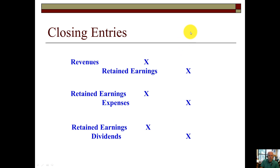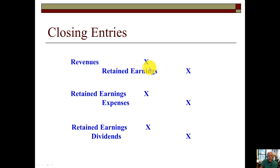Our closing entries are pretty simple. To zero out and reset the game clock, we zero out the revenues by debiting them — notice they normally have a credit balance — so by debiting them we zero them out and transfer that balance to retained earnings. Conversely, expenses have debit balances, so to zero them out we credit them and transfer that debit to retained earnings. Dividends also have a debit balance, so we credit the dividends to zero that account out and transfer that debit to retained earnings. If the credits from revenues exceed the debits from expenses and dividends, you have positive net income; if expenses exceed revenues, you have a net loss.